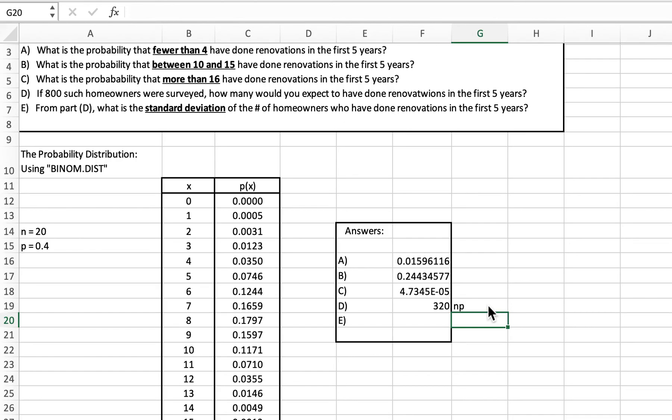Remember that the standard deviation is the square root of npq. Typing that in formula here, sqrt, we're still talking about the 800 people, times 0.4 times 0.6. It's probably going to be a decimal, and there's your standard deviation.